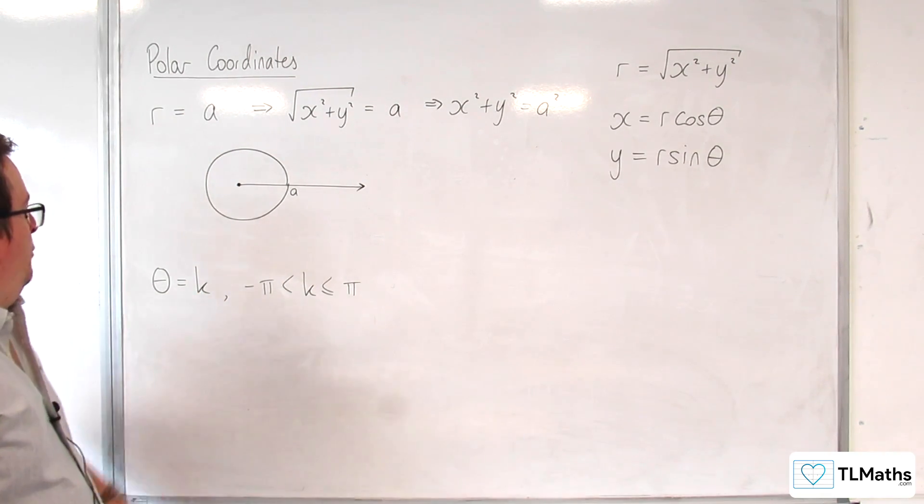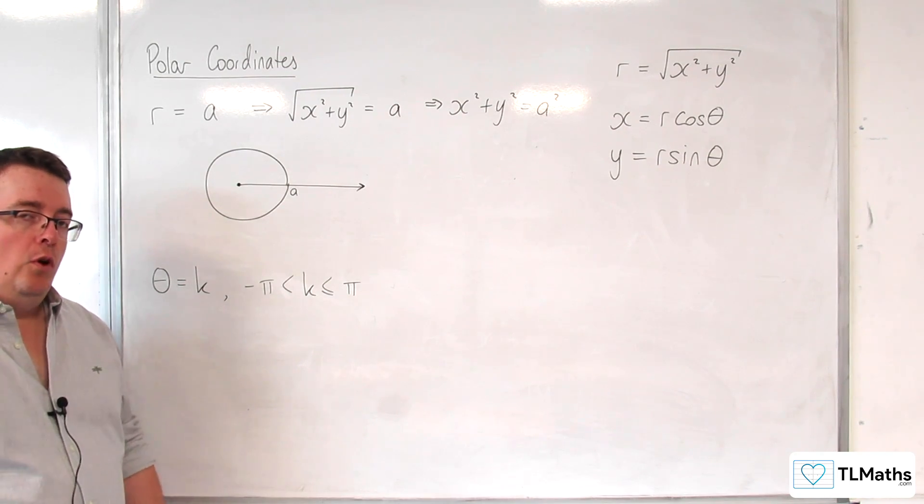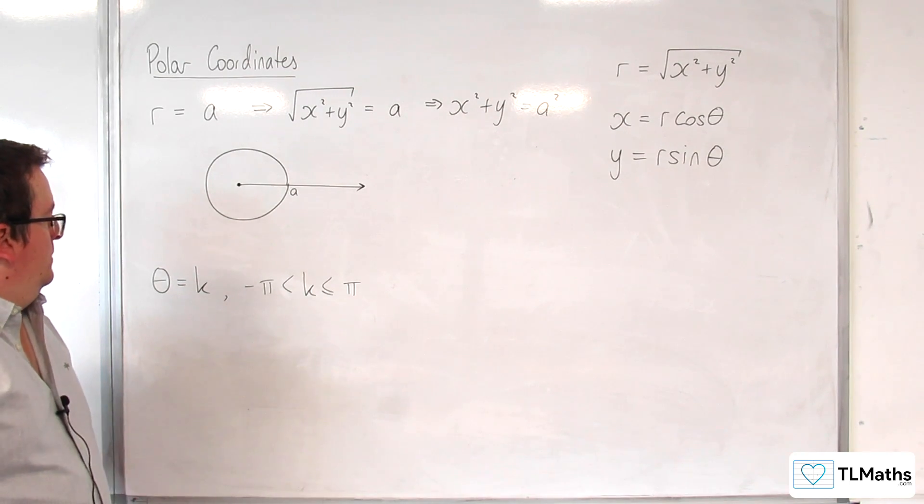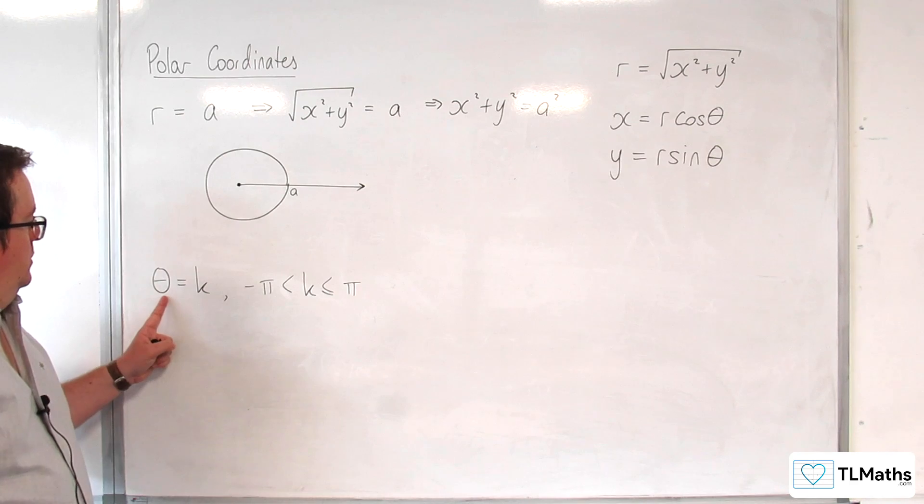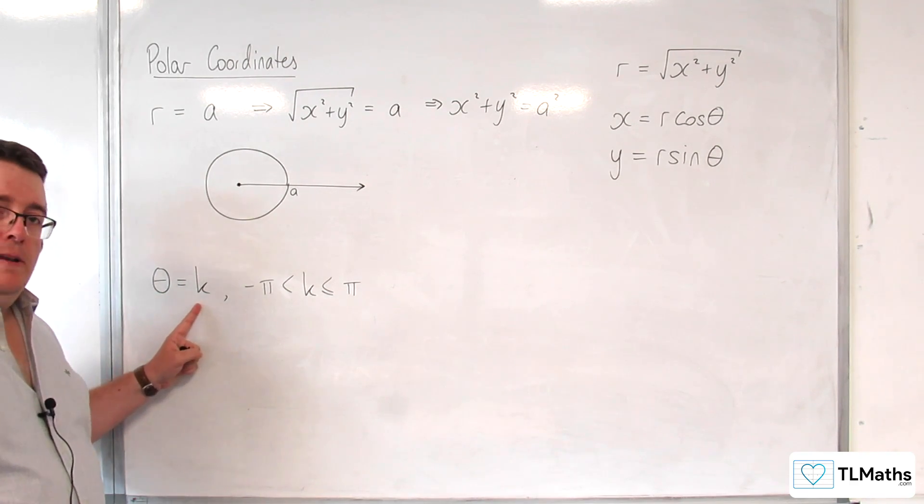Now what about this one, theta equals k - what could that mean? Well essentially you're saying that the angle is always some value k.